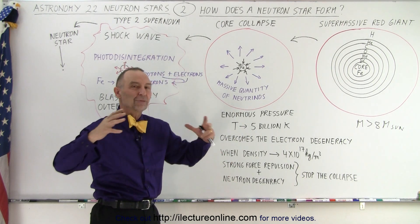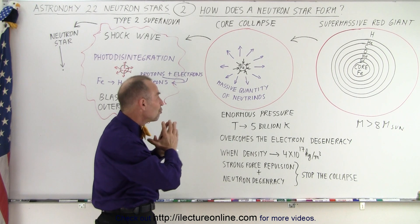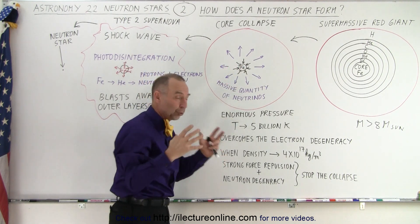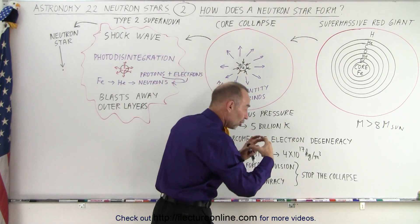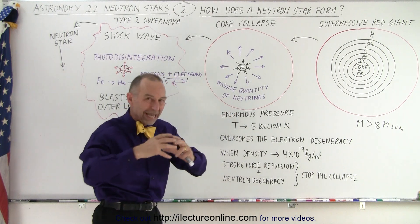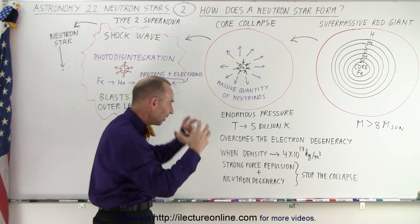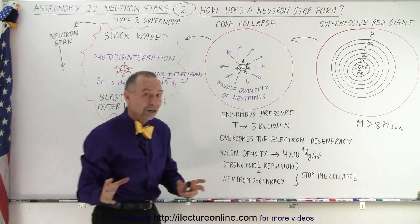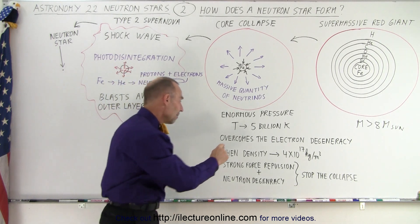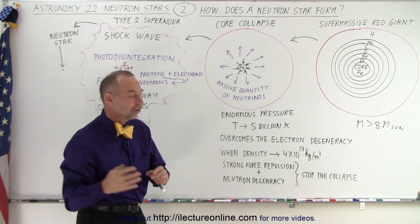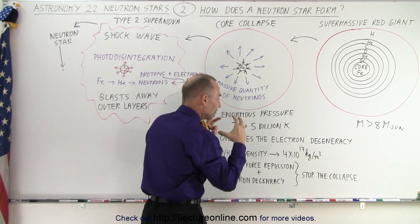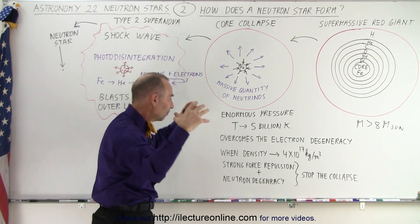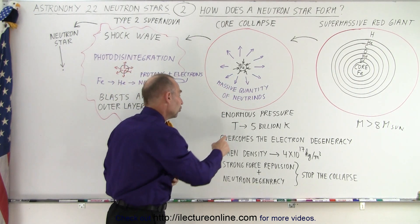At that point, there are so many gamma rays produced that they essentially rip apart the core. For the core to collapse, it needs to come in with enormous momentum, enormous mass of material collapsing on itself. Therefore, the minimum size of the initial star had to be 8 times the mass of the sun, because we have to overcome the electron degeneracy — all the electrons inside the core would prevent collapse unless there's enough pressure and speed of the material falling in on itself.